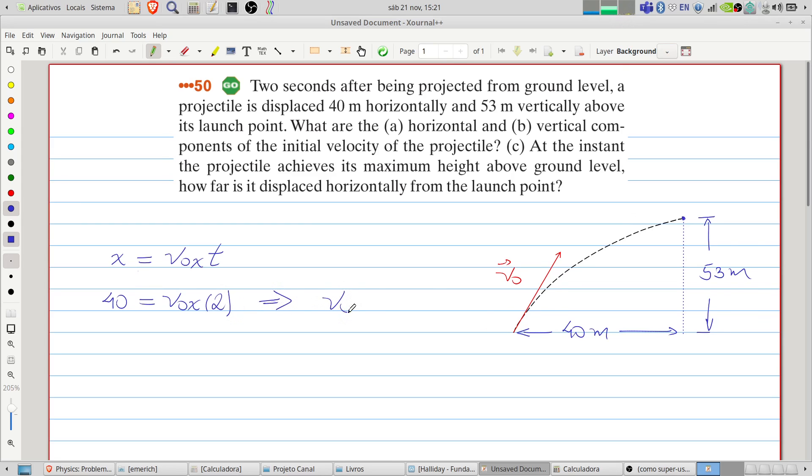Here we have 2 seconds. And solving this equation, we will find that the component x of the initial velocity in the x direction will be 20 meters per second. Very simple, straightforward.